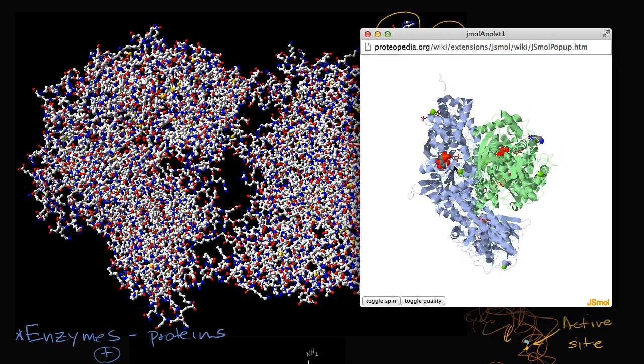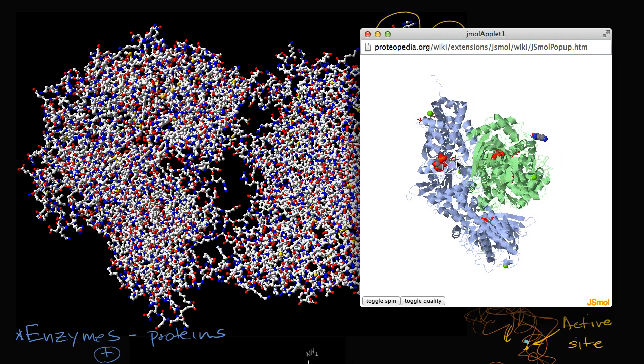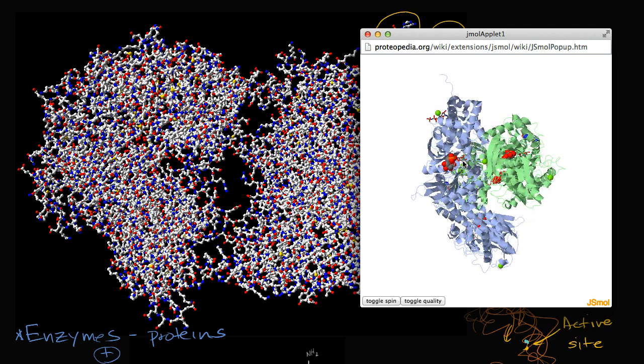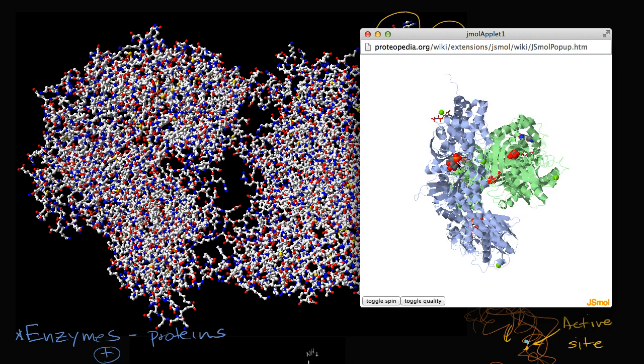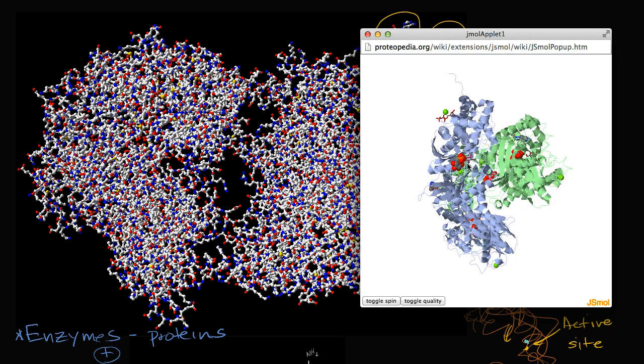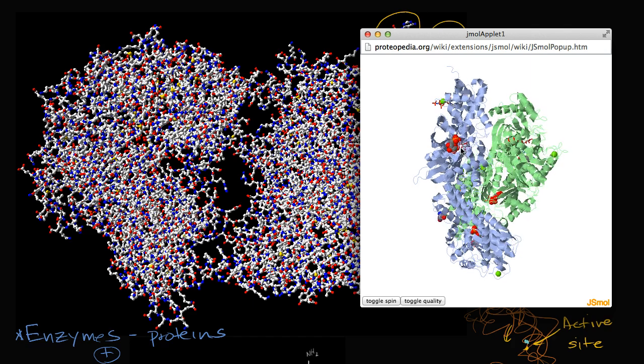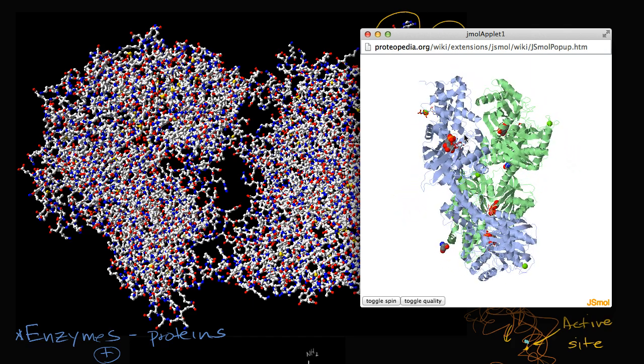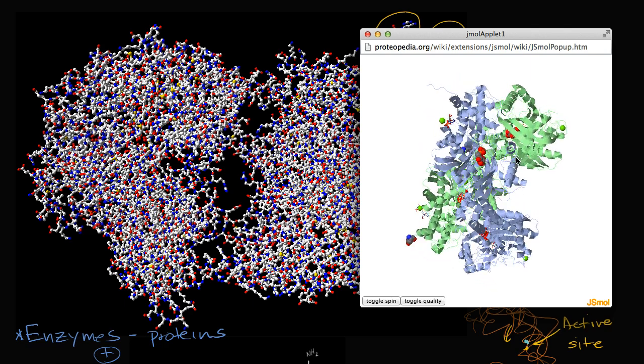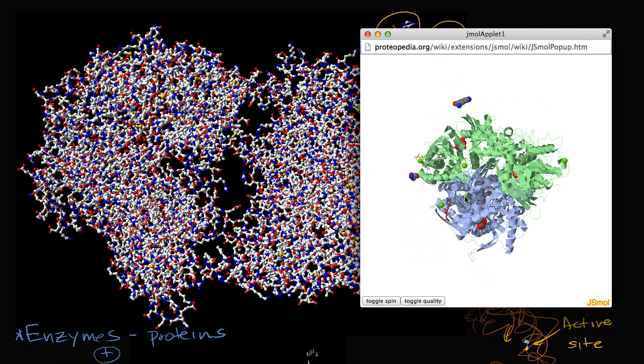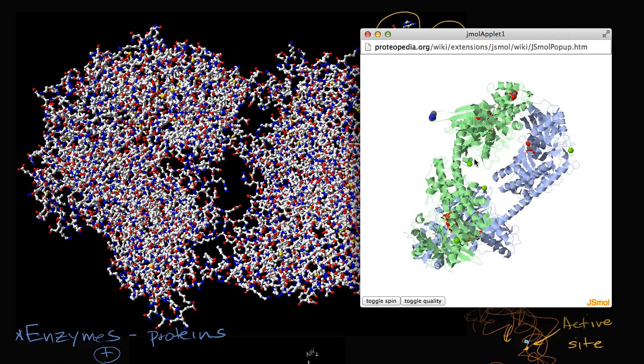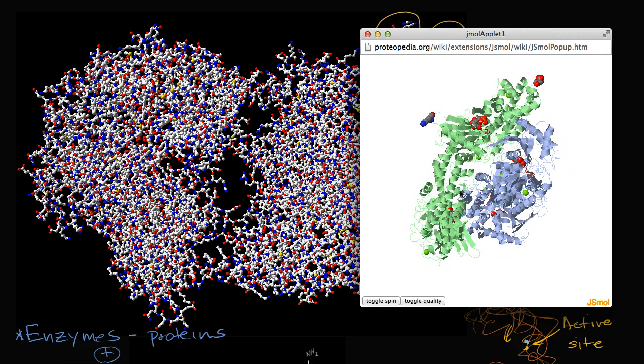But this gives you an appreciation of the binding sites and how these things might interact. This right over here is a molecule of ATP. And then right next to it, that is a molecule of glucose. And notice they are the two substrates. They have bound at the active site. And now they can interact with each other. The enzyme, the hexokinase in this case, can help facilitate the reaction that we care about, the phosphorylation of glucose. So hopefully images like this give you an appreciation for how complex and how beautiful these things actually are.